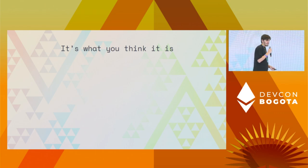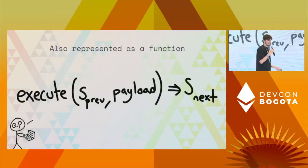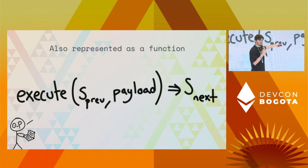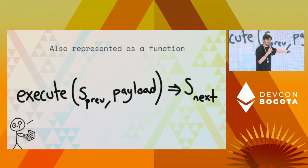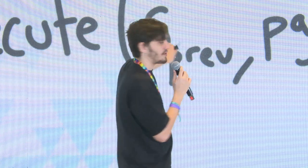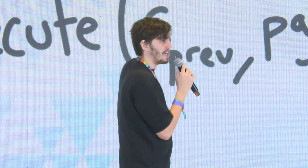What is the execution layer? It is what you think it is — the interesting part of the state transition function, the fun stuff where you do your crazy applications. In this system, it's also represented as a function in a very abstract way: you take the previous state, take a payload derived by the derivation layer, and transition into the next state. This statement says nothing about the EVM — it says nothing about the actual state transition function. It just says you need a state transition function.